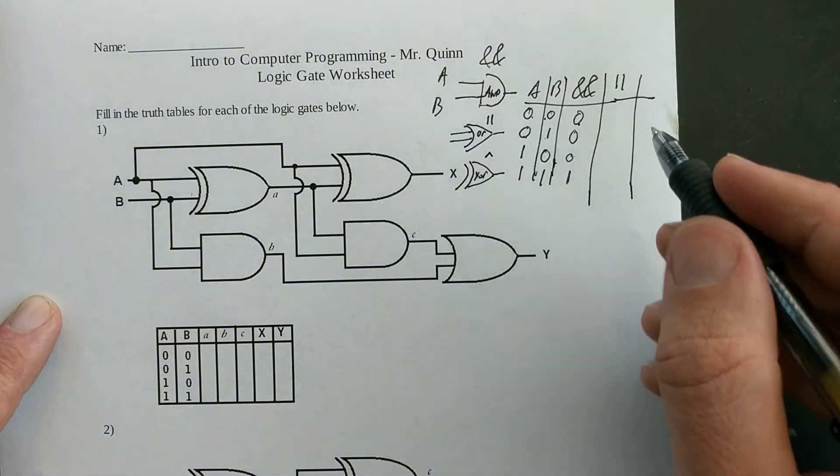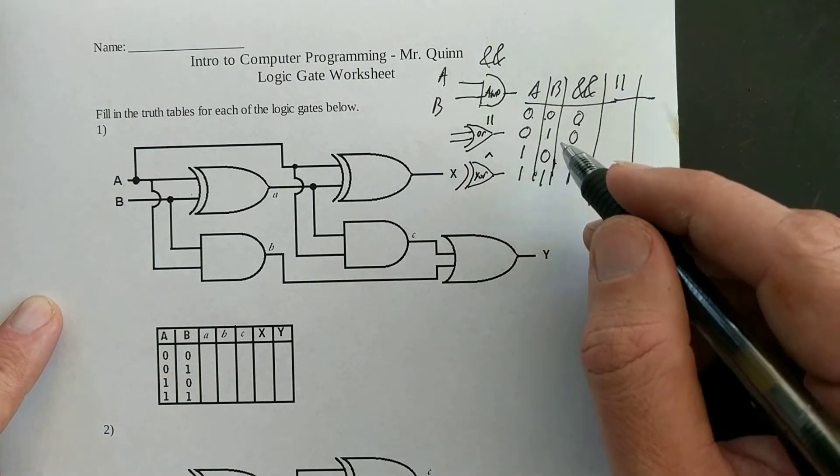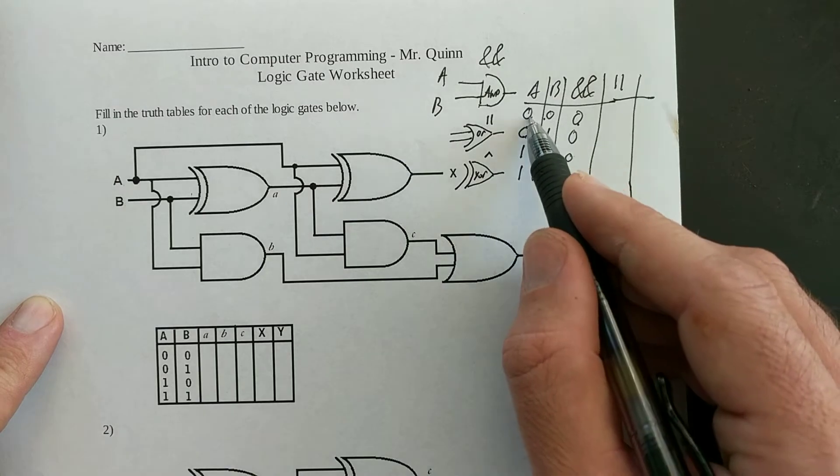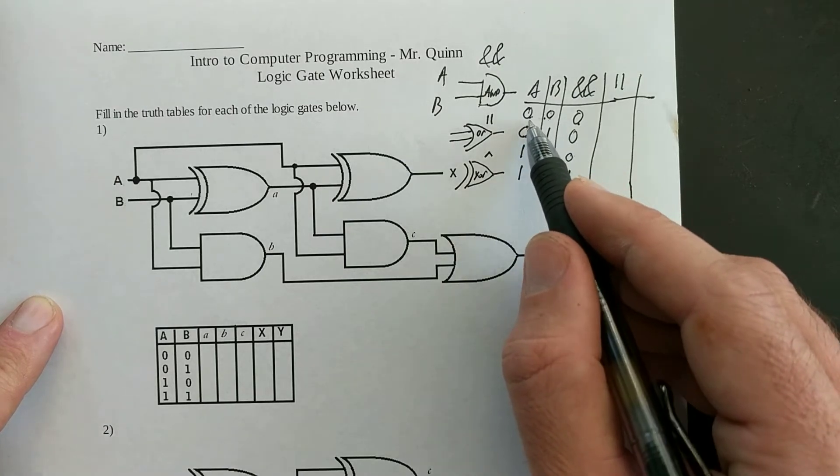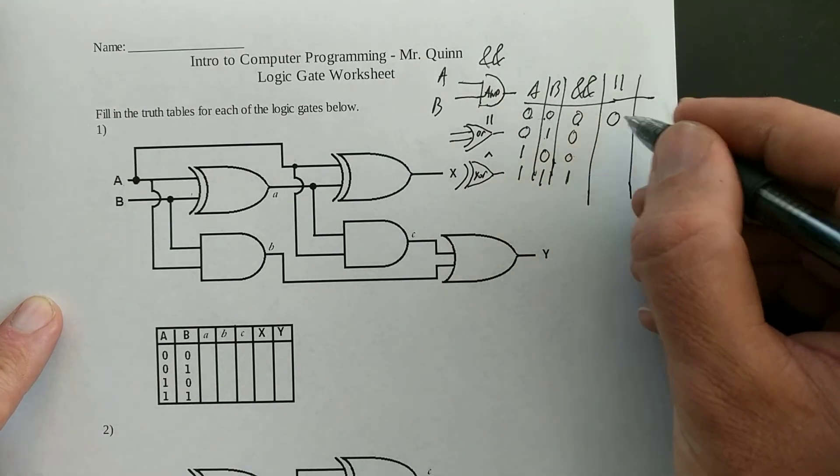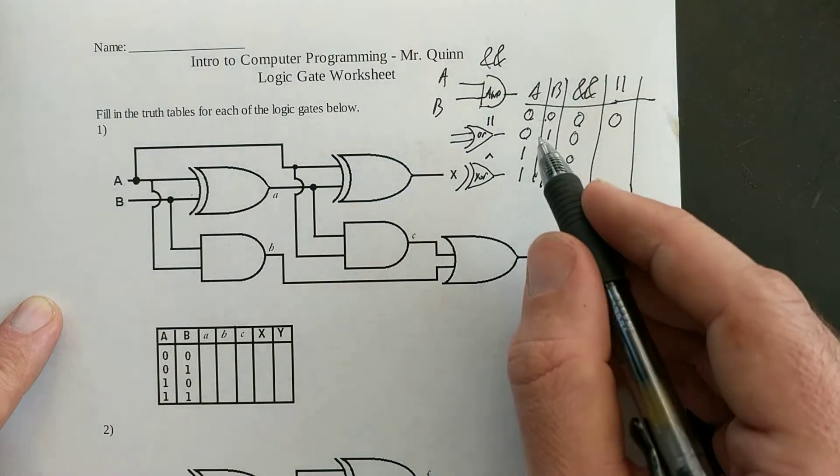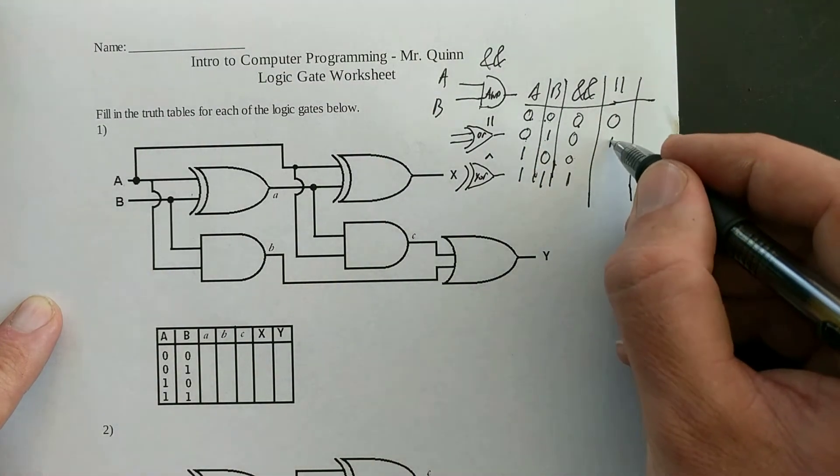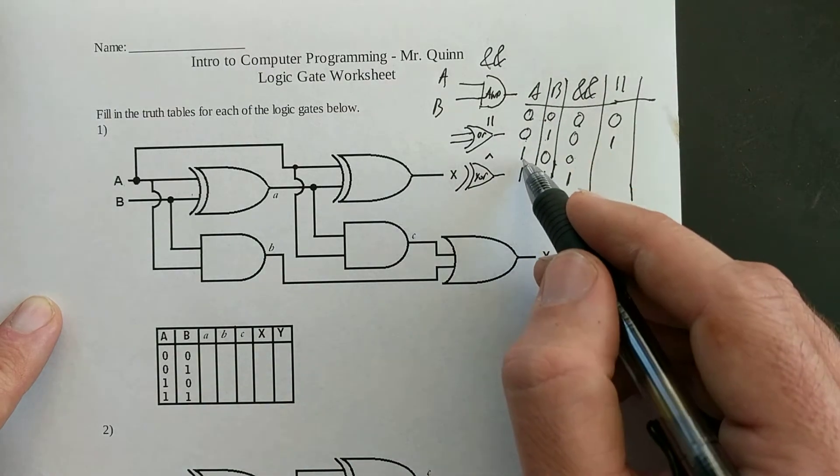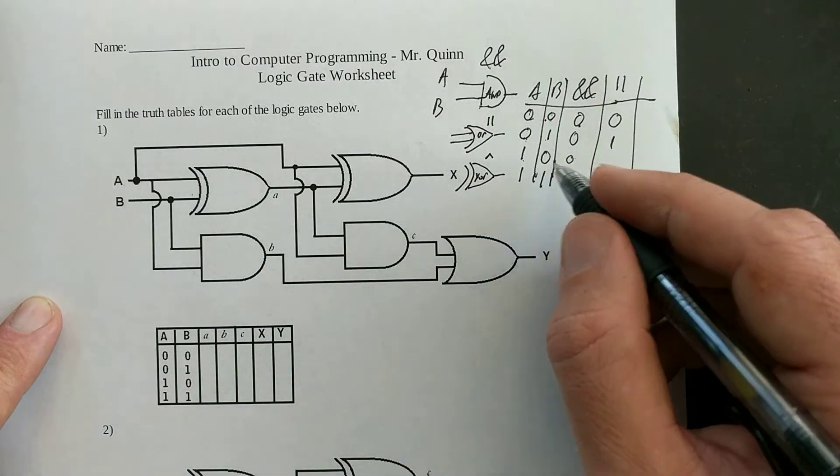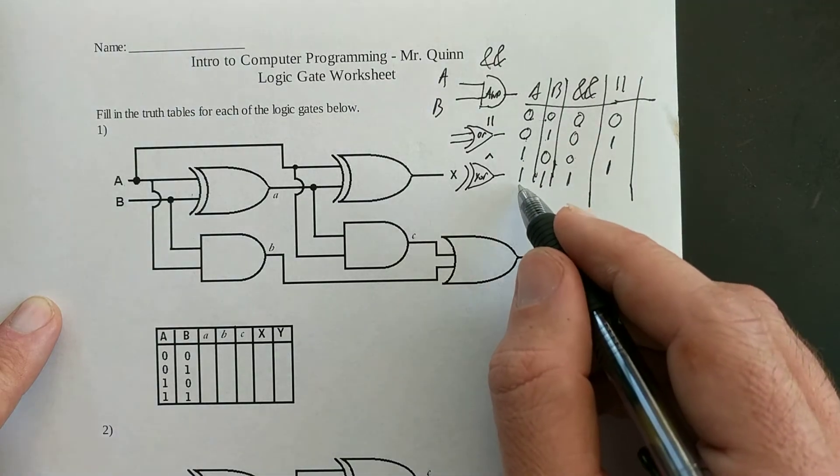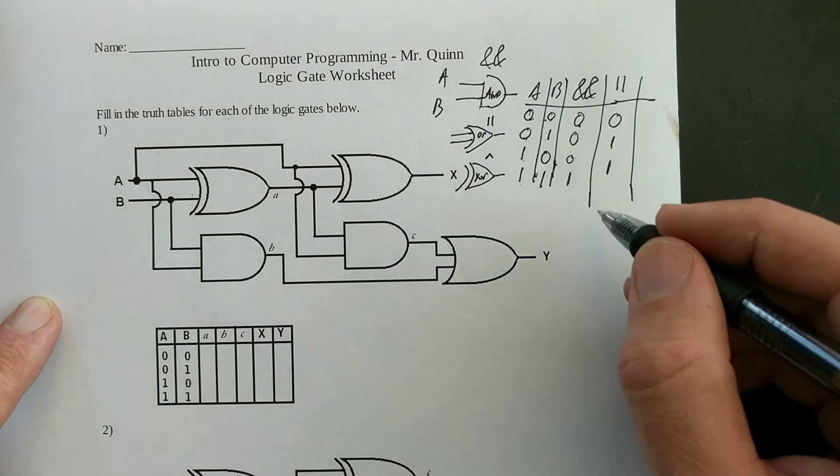So an OR gate tells you when at least one of the gates are on. So is A on or is B on? Well, in this case, no. They're both off. So the OR gate is going to give you an off output. Is A on or B is on? Well, B is on in this case, so the OR gate's on. A is on. I don't even need to look to B as long as one is on. The OR gate says yes, one is on. And then in this fourth scenario, both are on. Again, at least one is on.